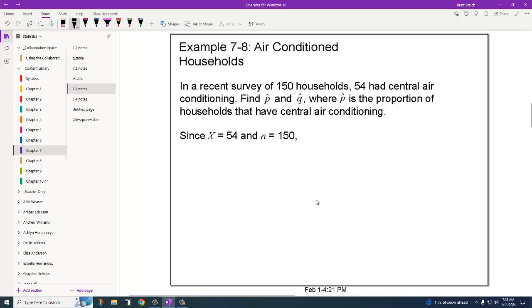The first thing we need to do is how do you calculate P hat and Q hat? A recent survey of 150 households, that would be N, 54 would be X, said that they had central air conditioning. Find P hat and Q hat, where P hat is the proportion of households that have central air conditioning. P hat is going to be 54 over 150, which comes out to 0.36. Q hat has to be its opposite that gets us to 100%. We're going to subtract that 0.36 from 1 and get 0.64.